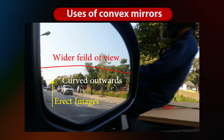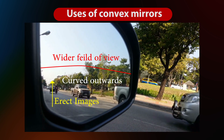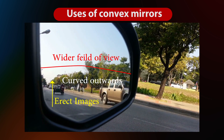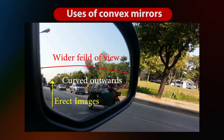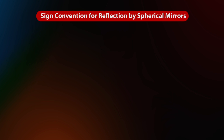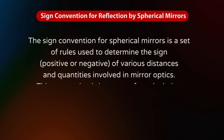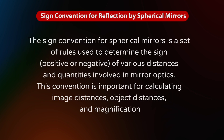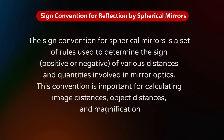Uses of convex mirrors: They are used as rear-view mirrors in vehicles because they always form an erect image and have a wider field of view as they are curved outwards. Sign convention for reflection by spherical mirrors: The sign convention is a set of rules used to determine the sign, either positive or negative, of various distances and quantities involved.